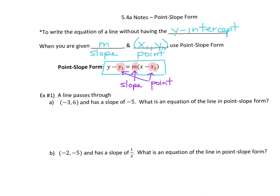Here's the first example: a line passes through the point (−3, 6) and has a slope of −5. What is the equation of the line in point-slope form? We have all this information. The −3 would be x₁, the 6 would be y₁, and the negative five would be m.